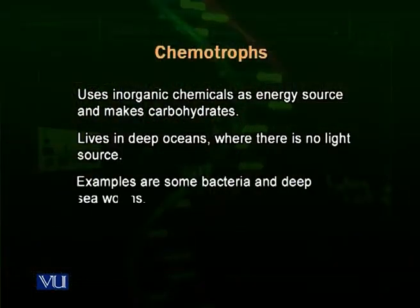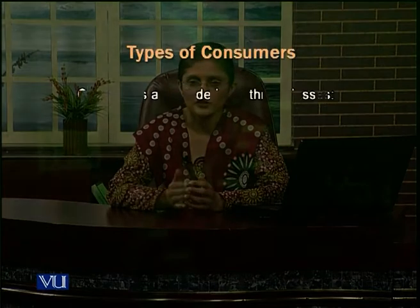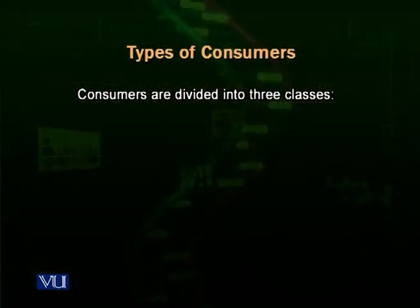We call them chemotrophs. Examples include some chemotrophic bacteria — there are different types of bacteria that live this way — and there are also some deep-sea worms which are chemotrophs and produce their food through inorganic chemicals.